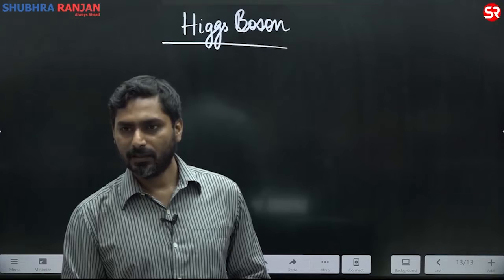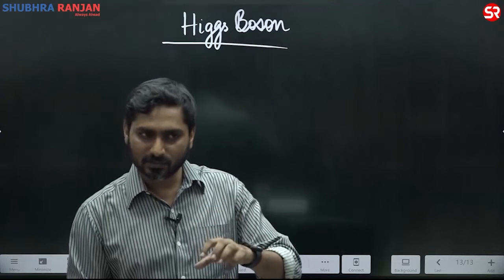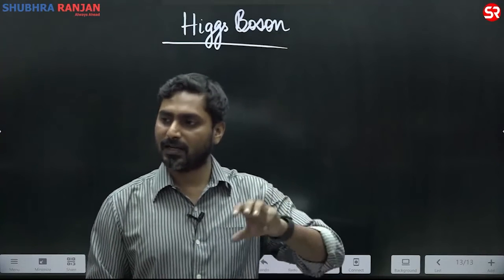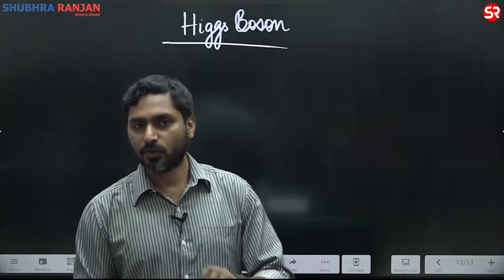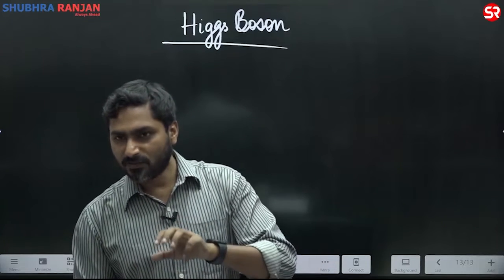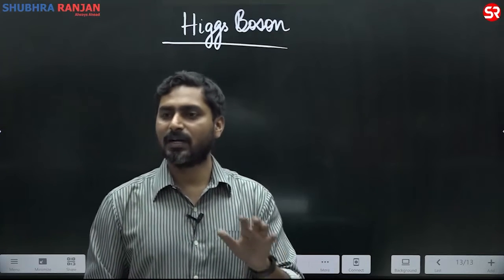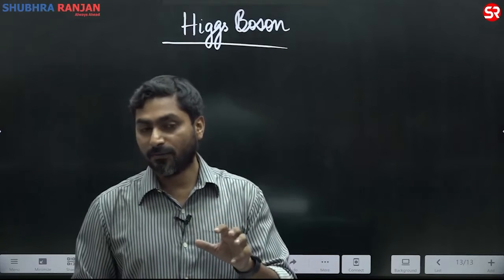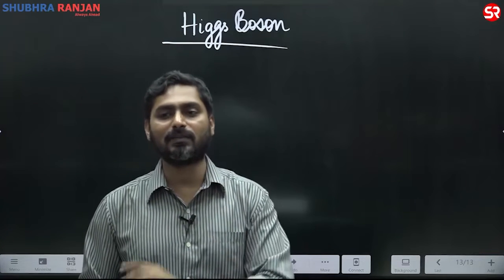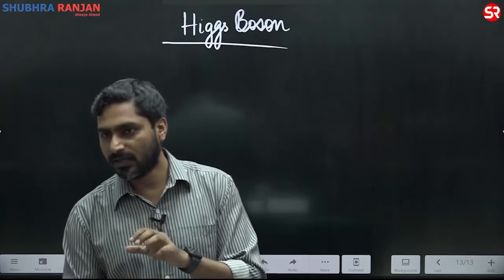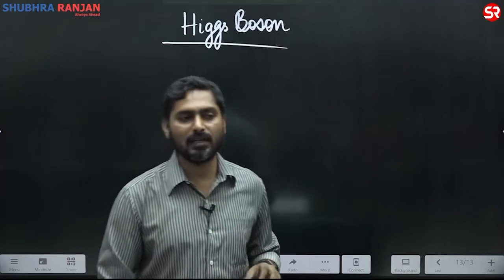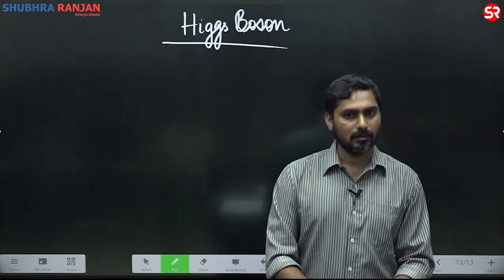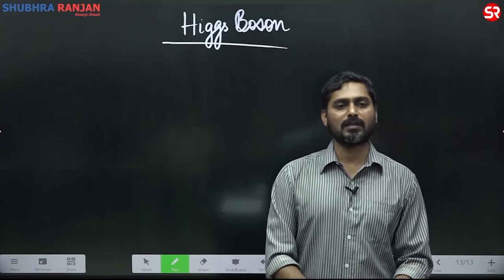An electron interacts less with the Higgs field compared to a proton, so the mass of the electron is less than the mass of the proton. A photon does not interact with the Higgs field at all — that is why a photon is known as massless.